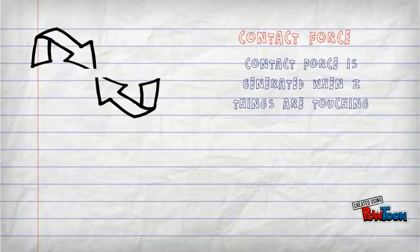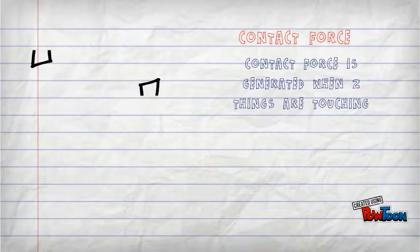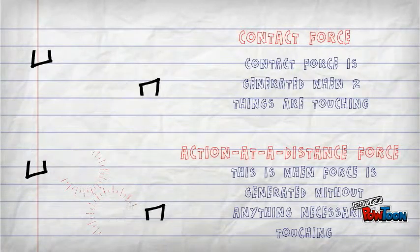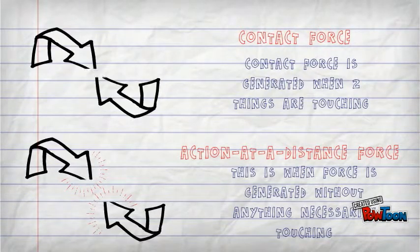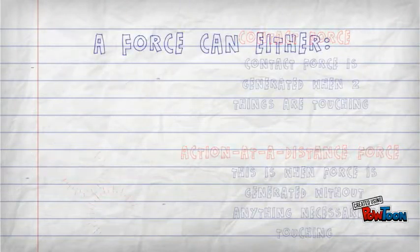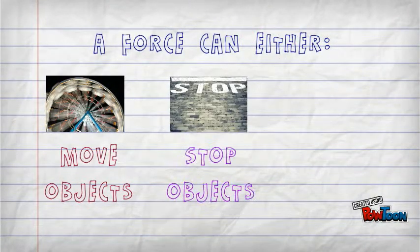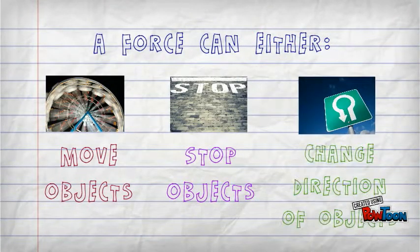A contact force is generated when two things touch, whereas action at a distance forces are generated without anything necessarily touching at all. A force can either move objects, stop objects, or change the direction of objects.